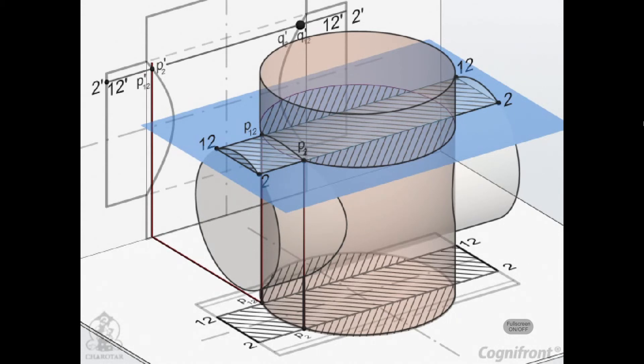Points on the other side of the vertical axis are located in the same manner in the top view.